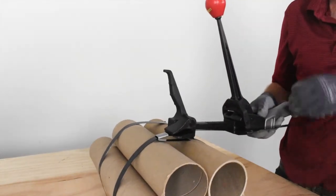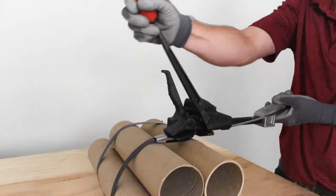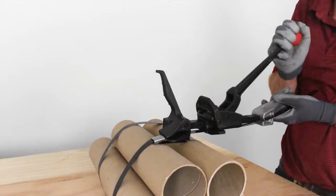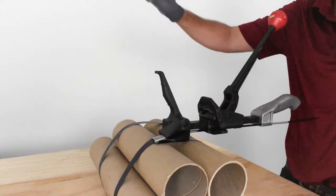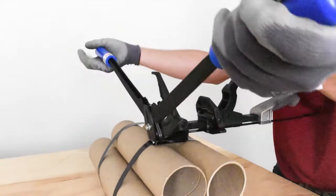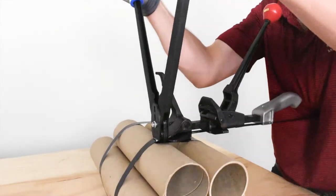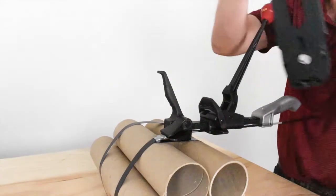So once you have that tension that you want there, go ahead and use your 1820, which is your single-notch sealer, making that crimp.